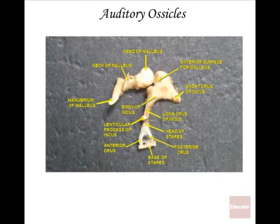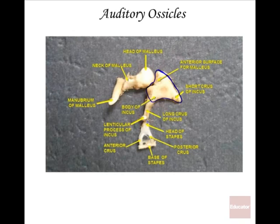Looking closely at the three auditory ossicles: the hammer — if you use your imagination, here's the head of the hammer you could bang on something with. This looks somewhat like an anvil, what a blacksmith would use. The incus or anvil is that middle bone of the three. And finally, here is the stapes or stirrup — it really does look like something you put your foot in. This is what hits the oval window of the cochlea. Amazingly, all three bones could fit on your thumbnail — the smallest bones in the human body.